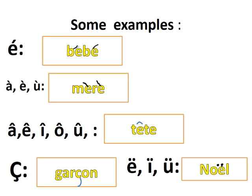Next is the Cedille — I said you write it in place of C to change the word. For example, 'garçon' is sounding as S. Then next one is the Accent Tréma — you can see two dots written on top of E, I, or U. So wherever we see those vowels, we put the Accent Tréma.